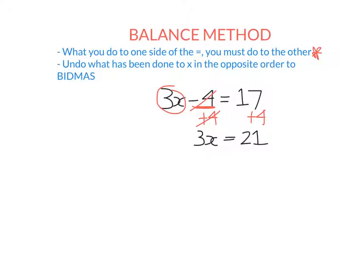Now I'm going to undo timesing by 3 by dividing each side by 3. So if I divide the left hand side by 3, I divide the right hand side by 3. 3x divided by 3 is x, because timesing by 3 and dividing by 3 undo each other. And 21 divided by 3 is 7. That is my solution, because 3 times 7 minus 4 does equal 17.